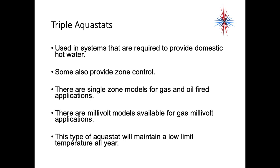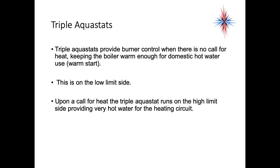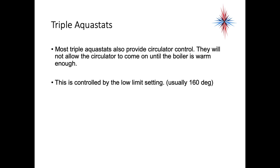Triple aquastats are used in systems required to provide domestic hot water. Some also provide zone control. There are single zone models for gas and oil fired applications, and millivolt models available for gas millivolt applications. This type of aquastat maintains a low limit temperature all year round — the boiler is always warm. Triple aquastats provide burner control when there's no call for heat, keeping the boiler warm enough for domestic hot water — known as warm start. Upon a call for heat, the triple aquastat switches over to the high limit side, providing very hot water for the heating circuit. Most triple aquastats also provide circulator control and will not allow the circulator to come on until the boiler is warm enough, controlled by the low limit setting, usually about 160 degrees.